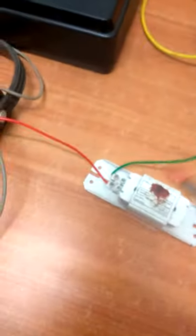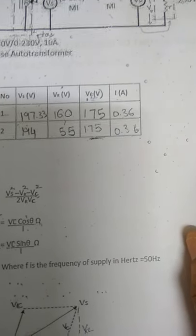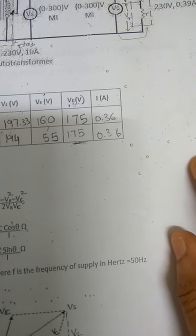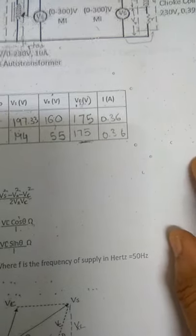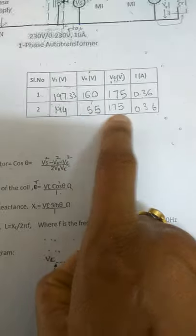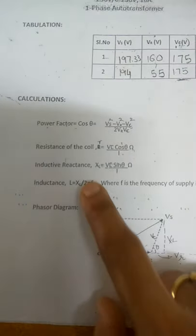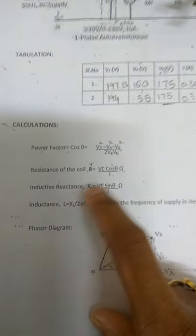Similarly, you have to conduct readings for different values of current. For current 0.36 A, another set of readings: Vs is 197.33 V, Vc is 175 V, and Vr is 60 volts across the rheostat. Another set of readings: Vs is 194 V, Vr is 55 V, Vc is 175 V, and current is 0.36 A.